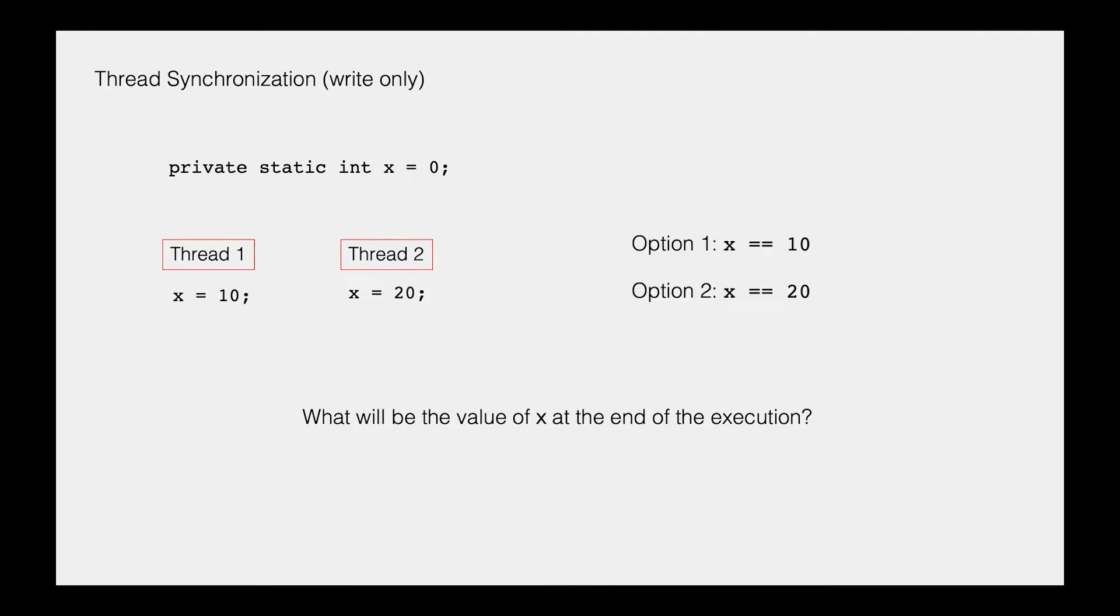Option 1, if thread 2 goes first, it will write the value 20 into the variable x. And finally, thread 1 will go, and it will overwrite that value with its own value, which is the value 10. In this way, we got the option 1, and at the end, the value of x will be 10. If the threads are scheduled the other way around, so thread 1 first and thread 2 the second one, we got the option 2.